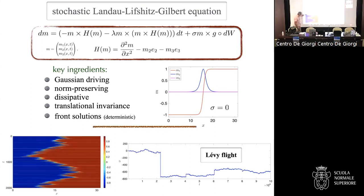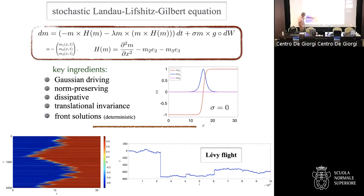Here I show a waterfall plot of the m1 component. The tanh goes from minus one to plus one, and you can see the frontal interface undergoing a stochastic process. I want to present strong evidence that the process performed by this domain wall or front interface is actually a Lévy flight.